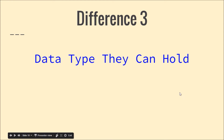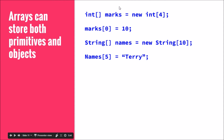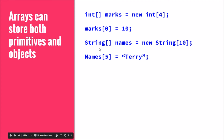The third difference is the type of data they can hold. Arrays can hold both primitives and objects, whereas ArrayList can only store objects. For example, you can declare 'int[] marks = new int[4]' and store primitive int values. There are other Java primitives like float, long, double, and so on — you can create arrays of any of these primitives. You can also create arrays of objects like String, Person, or Vehicle.